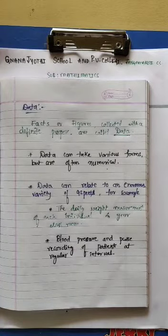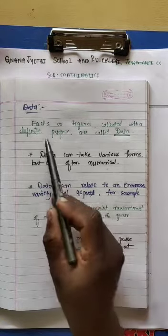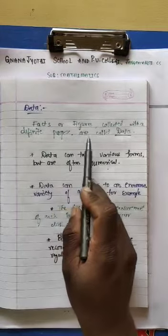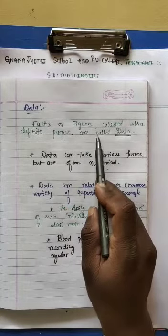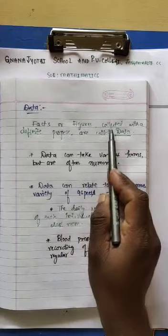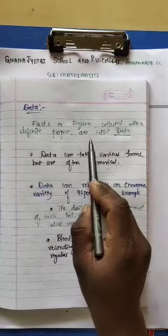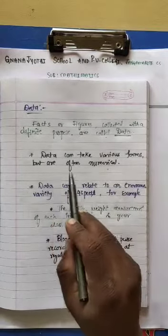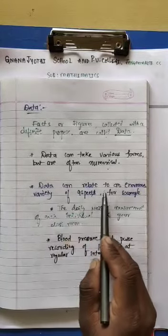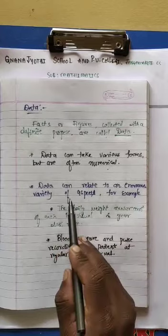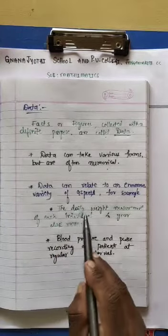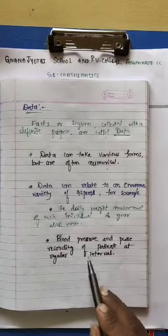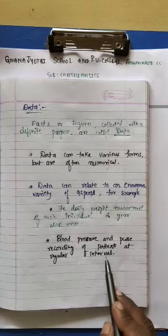Next, we are going to discuss about data. The definition of data: facts and figures collected with a definite purpose are called data. Data can take various forms but are often numerical. Data can relate to an enormous variety of aspects. For example, the daily weight measurement of each individual in your classroom, and blood pressure and pulse recording of patients at regular intervals.